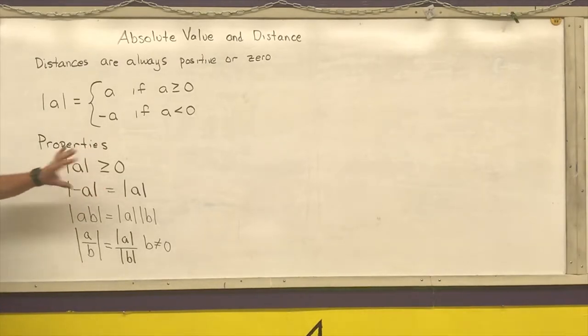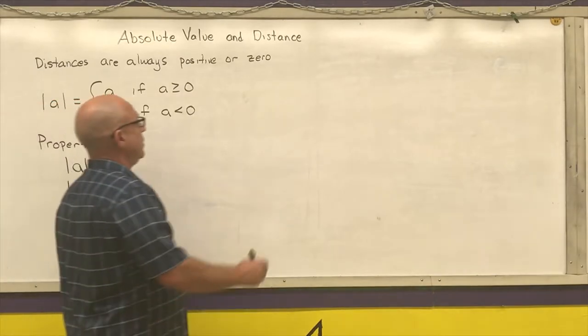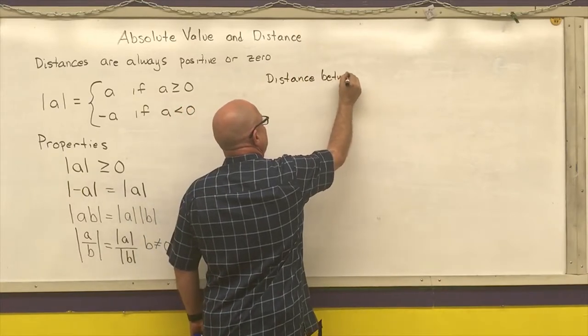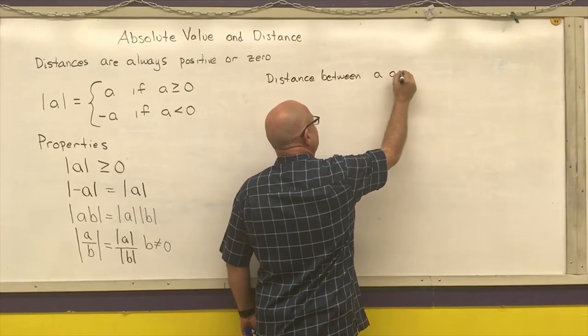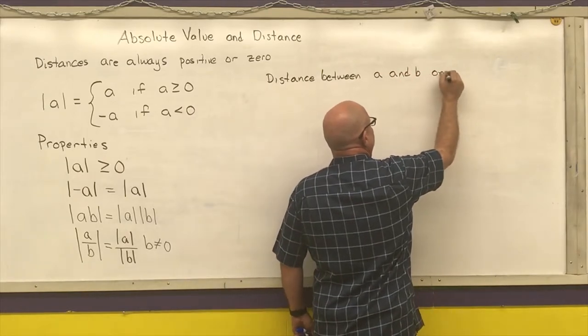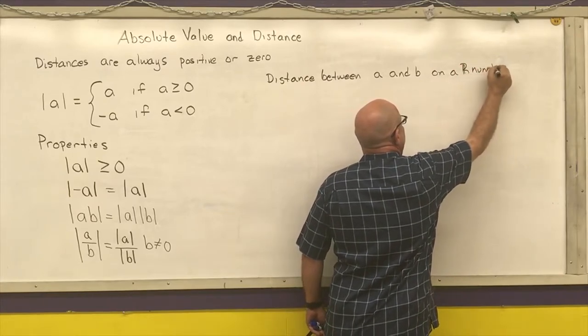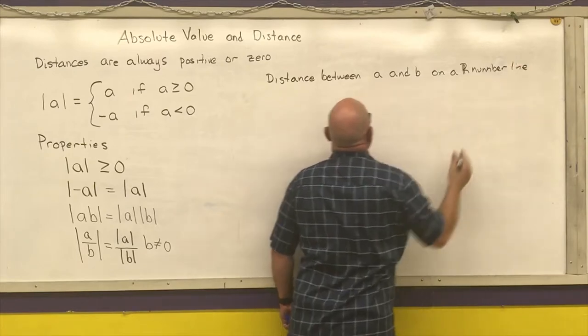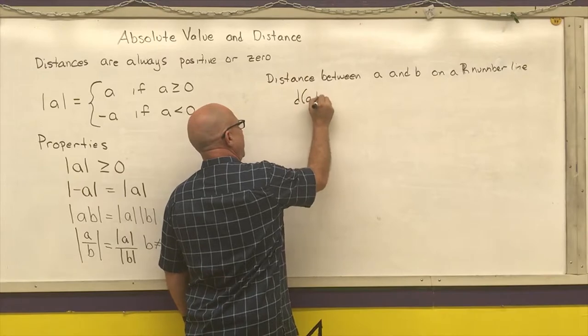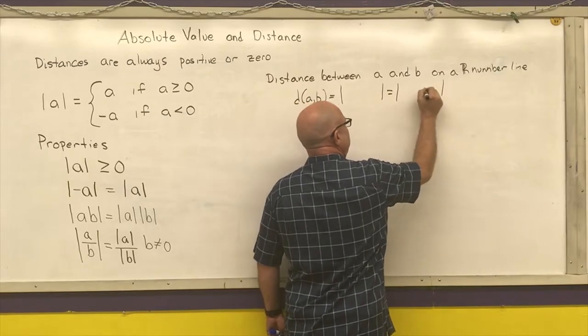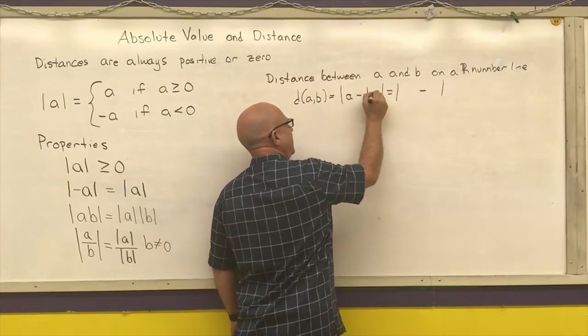So you can use these properties to help you simplify things. Our actual definition of distance between A and B on a real number line, I'm going to put D(A, B), is equal to the absolute value of the difference of the numbers on the two endpoints.